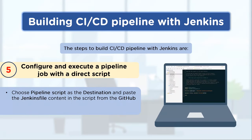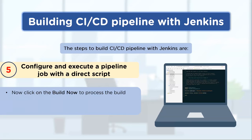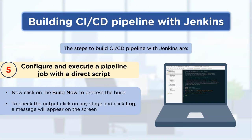You can configure and execute a pipeline job with a direct script, or put the Jenkins file into your GitHub link. Provide the GitHub link where the Jenkins file is located, save the configuration, and the pipeline script will be picked up automatically. Then click 'Build Now' — you will be able to see how the build process is performed, and you can click on console output to get all the logs for every pipeline step being executed.